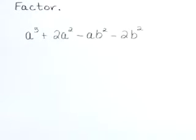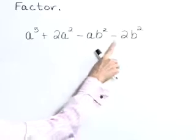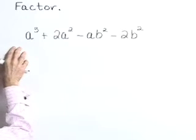Factor a to the third plus 2a squared minus ab squared minus 2b squared. If we had a greatest common factor, we would take that out first, but there is none.